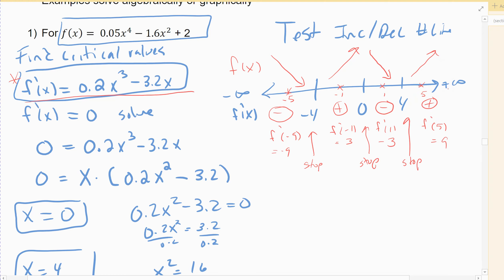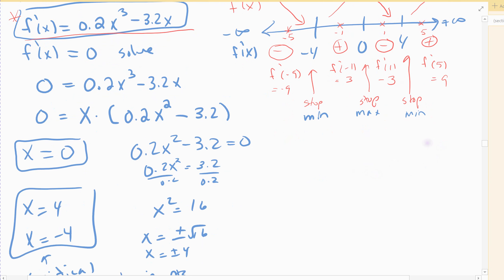The number line kind of gives you the shape of the original graph. If I'm decreasing, then increasing, that stopping point has to be a minimum. If I'm increasing, stop, then decreasing, that has to be a maximum. And the last point: decrease, stop, increase — minimum again. The number line gives you the fallout.